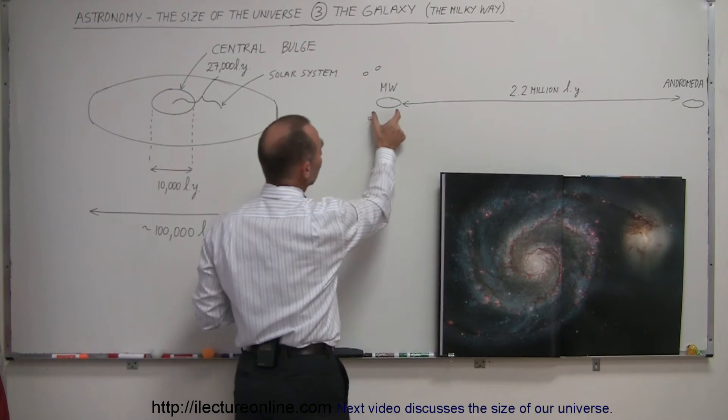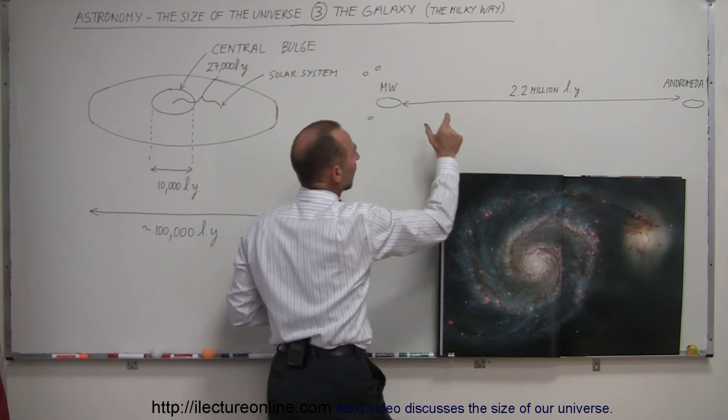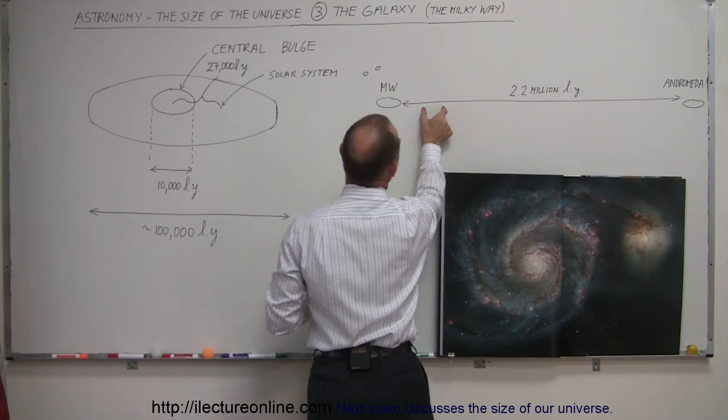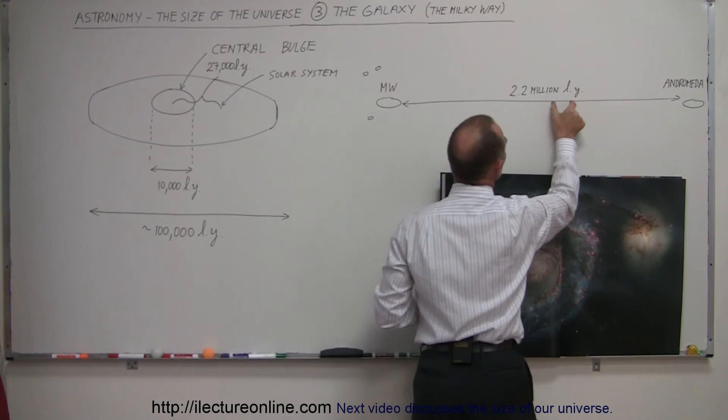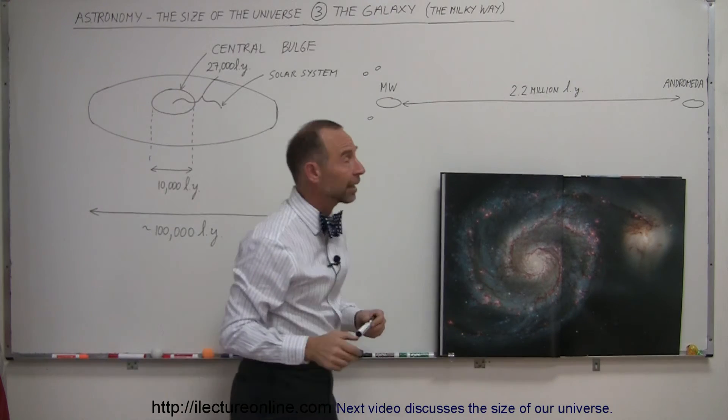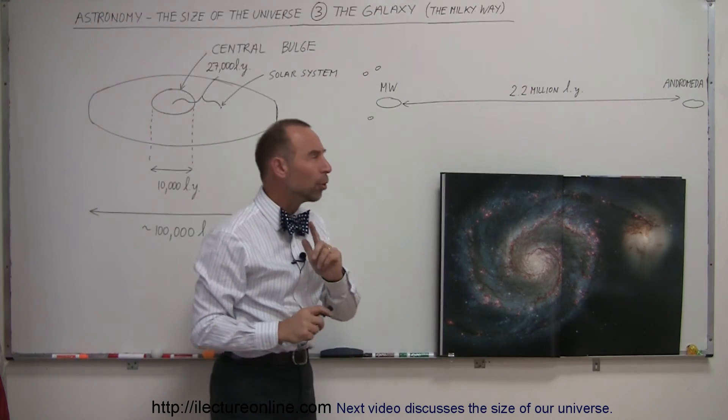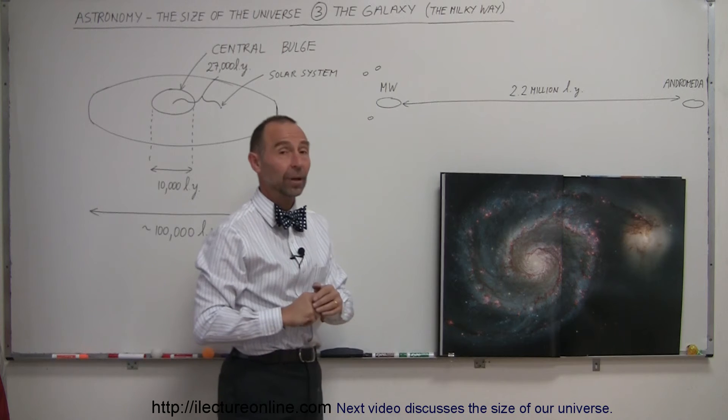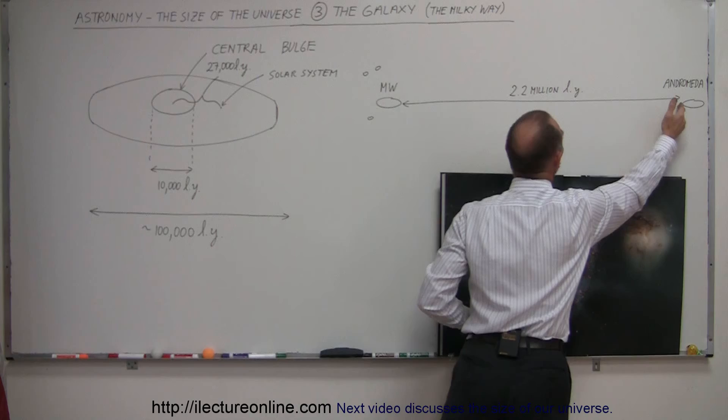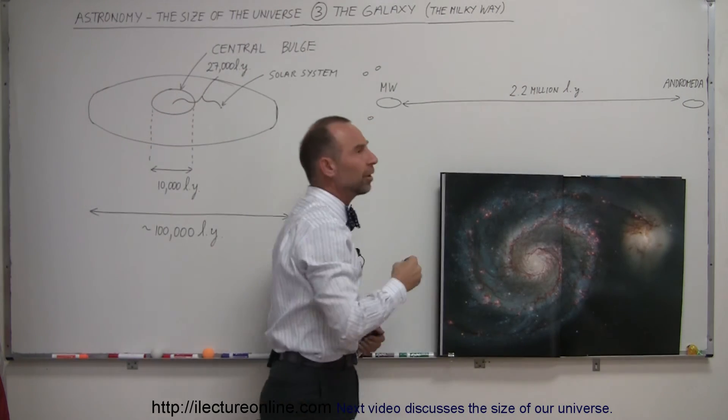And at this scale, if I drew the galaxy about this big, and notice that if this is 100 light years across, if you take 22 of those all the way across, eventually you would end up at another galaxy like the Milky Way galaxy called the Andromeda Galaxy. That galaxy is 2.2 million light years away, which means that any light coming from the Andromeda Galaxy would take an enormous 2.2 million years to get to us.